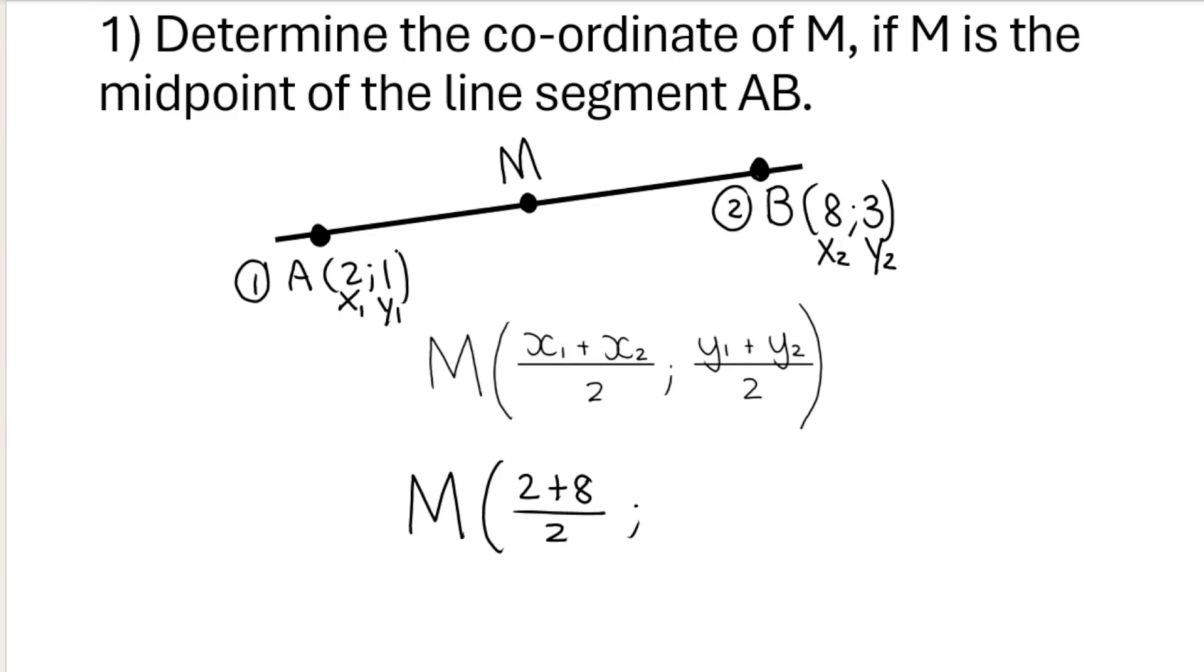It's always going to be divided by 2. Then I take the y of coordinate 1, which is this value over here, number 1, plus the y of coordinate 2, which is this value over here, 3, and I divide by 2. It's always going to be divided by 2. If I simplify that, 8 plus 2 is 10 divided by 2 gives me 5, and 3 plus 1 is 4 divided by 2 gives me 2. So this coordinate over here, this midpoint, would be 5 and 2.